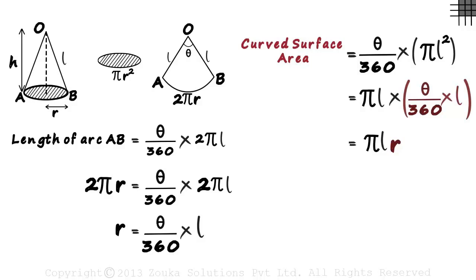We found out the length of arc AB in two different ways and equated them. And then we found out the curved surface area using the formula of a sector of a circle. And then finally substituted the value of R in this formula to eliminate theta. Now it's very simple.